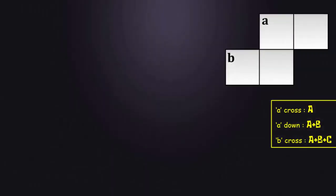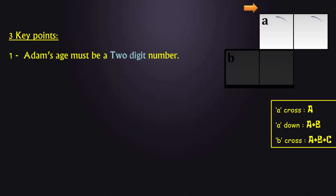We can easily solve this problem with the help of three key points. Number 1: Adam's age has to be a two digit number. It cannot be a single digit value, because as per the condition given in the puzzle, leading zeros are not allowed.